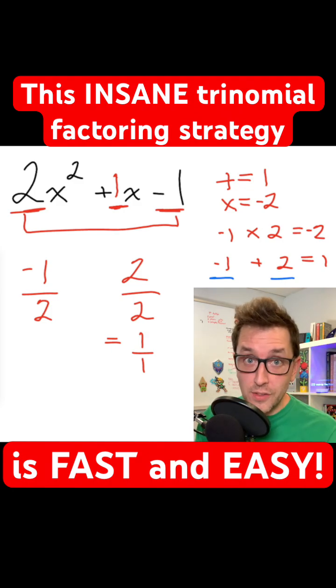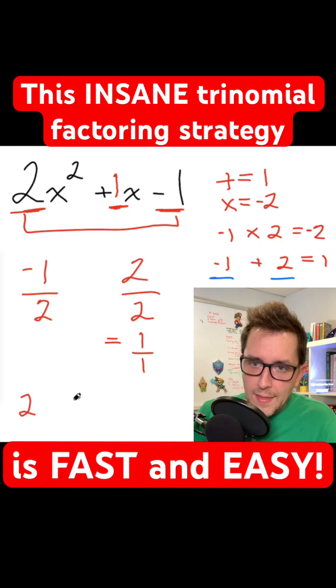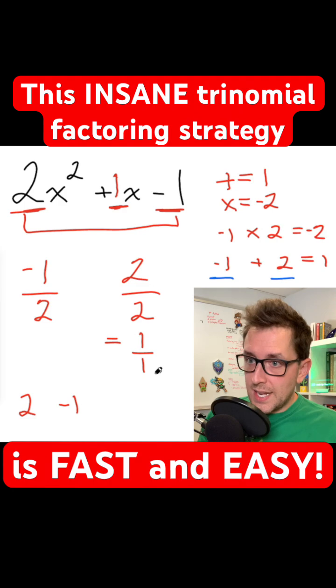We're gonna roundhouse kick these fractions, tipping it over from left to right. Leave the denominator of two where it is, and that negative one, including the sign, is gonna come down and sit next to it. We're gonna do the same thing for the second fraction.